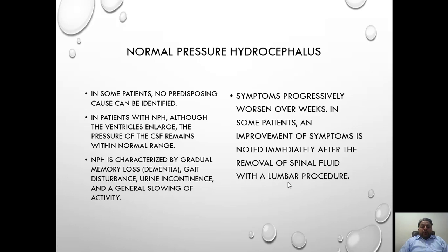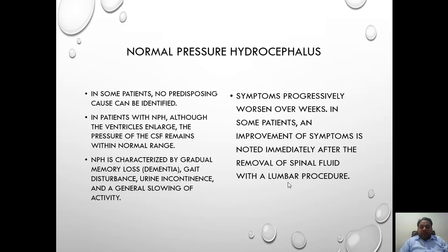Another cause of communicating hydrocephalus is normal pressure hydrocephalus. It presents with a triad: memory loss, gait disturbance — called a gluing gait — and urinary incontinence. In this condition there is hydrocephalus, but when we perform a lumbar puncture to assess the pressure, the pressure will be normal. So there is hydrocephalus but with normal pressure — this is called normal pressure hydrocephalus. The treatment will be shown in the coming slides.